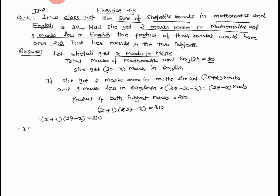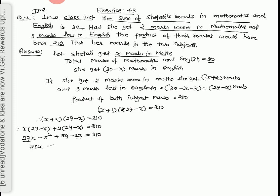Therefore x into 27 minus x plus 2 into 27 minus x equal to 210. x into 27, 27x minus x squared plus 54 minus 2x equal to 210.